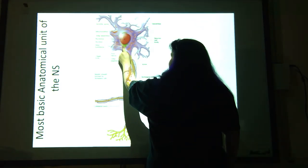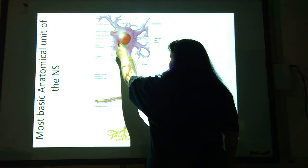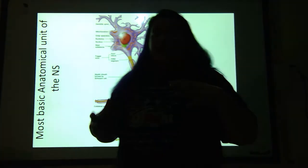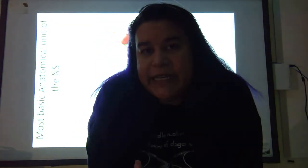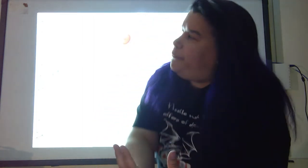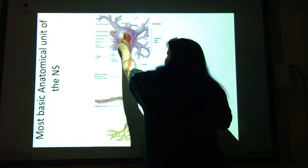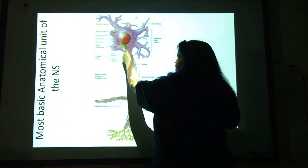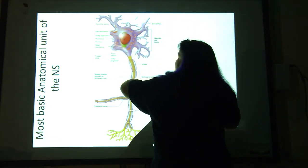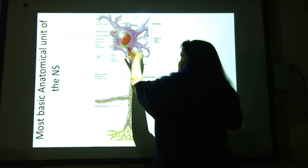You also have Nissl bodies in the cell body. Nissl bodies are actually your rough endoplasmic reticulum that makes protein. Just like muscle had the sarcolemma and sarcoplasm, we have to name things differently because it's a neuron, not a regular cell. We also have the Golgi apparatus — it kind of looks like a stack of pancakes — and mitochondria with that same pinto bean shape and squiggly in the middle.